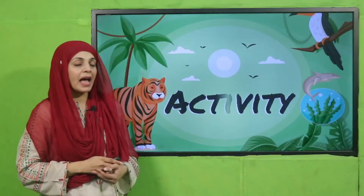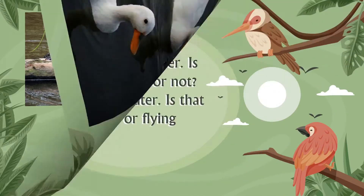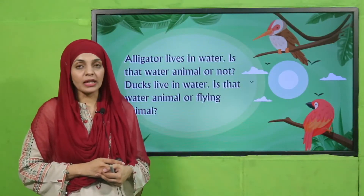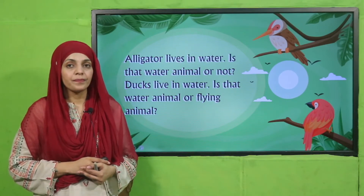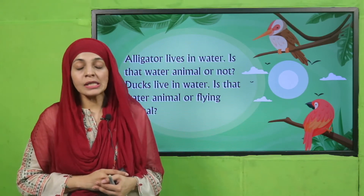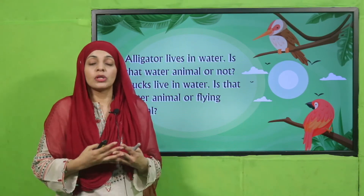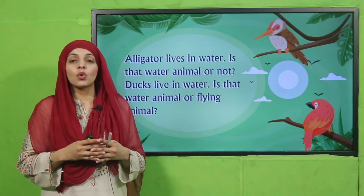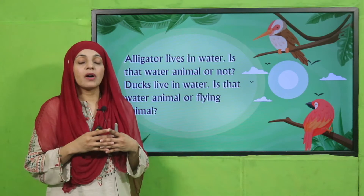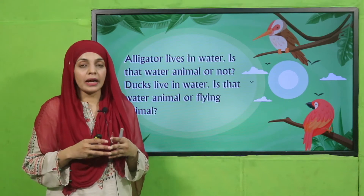Now let's move forward with the activity. My dear students, on your screen you can see two animals — a crocodile or alligator, and a duck. My question is: these animals also go into water, so are they water animals or land animals? These are not water animals, my dear students — these are land animals. Animals that build their homes on land and get their food from land are called land animals.